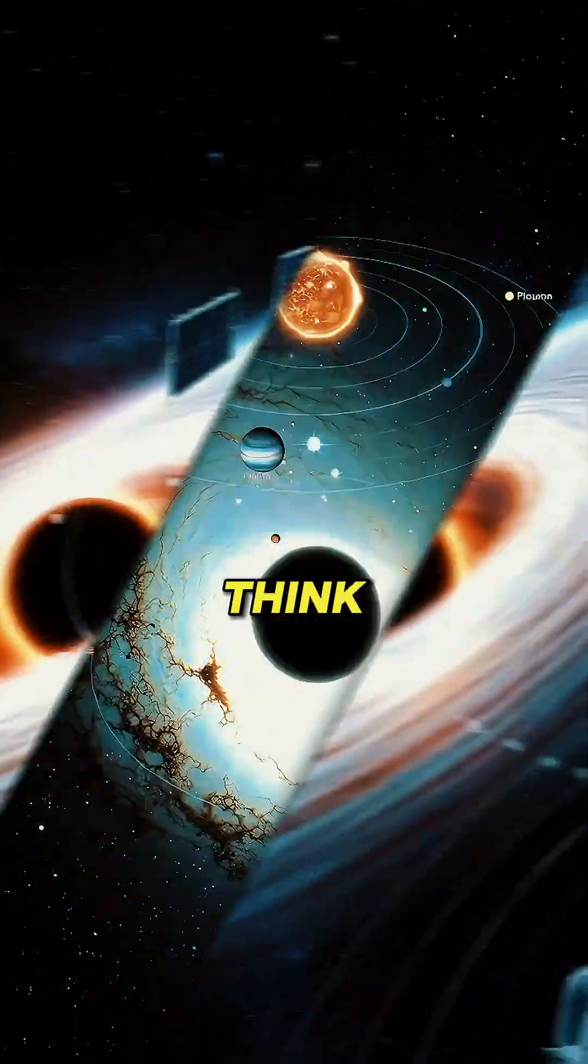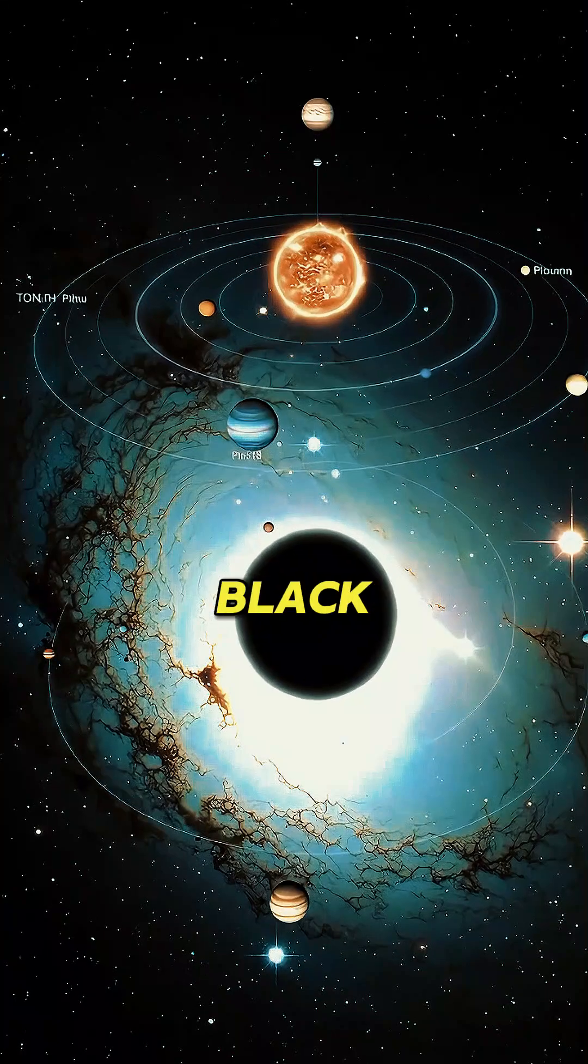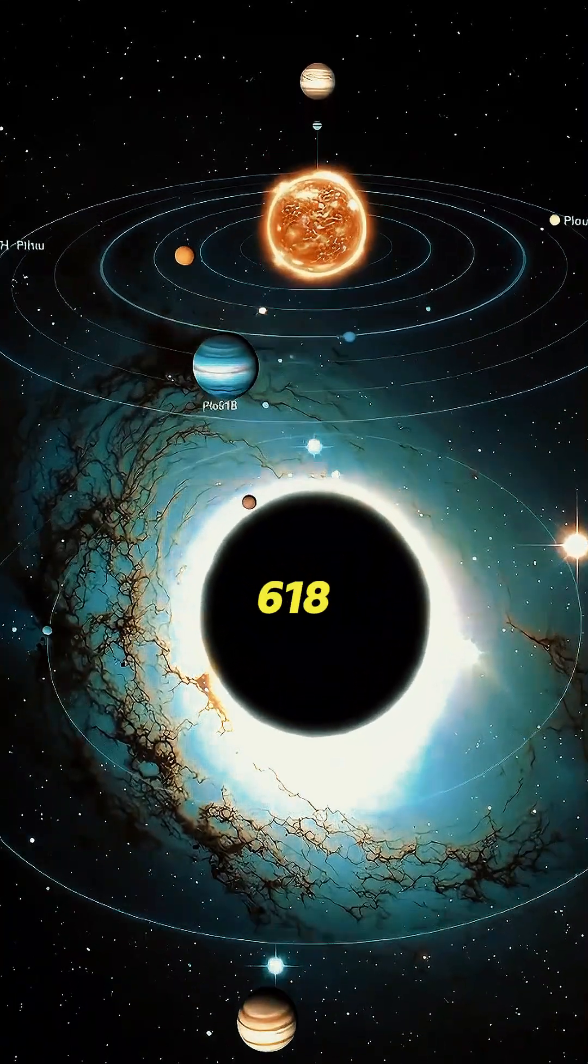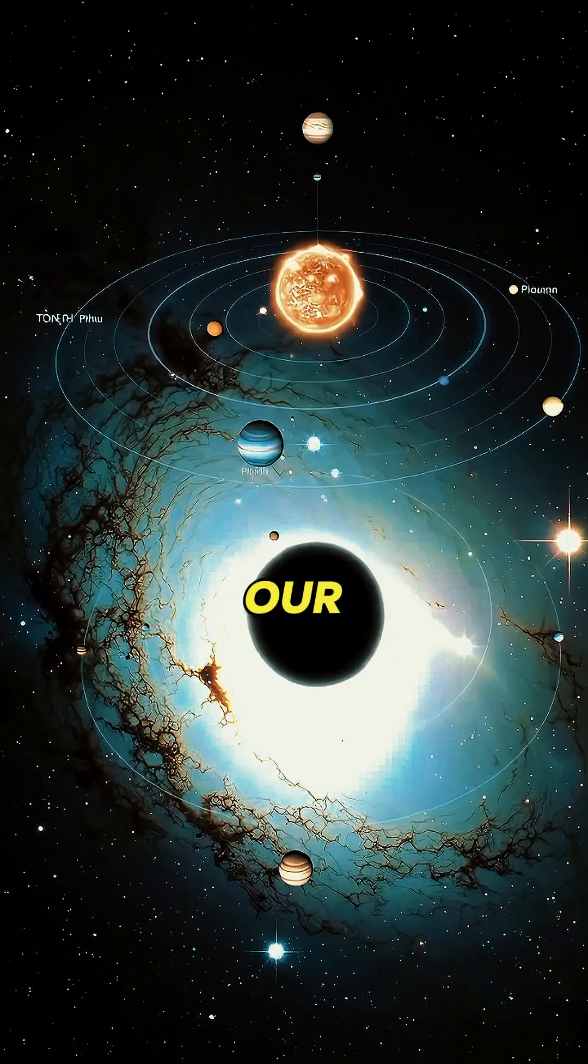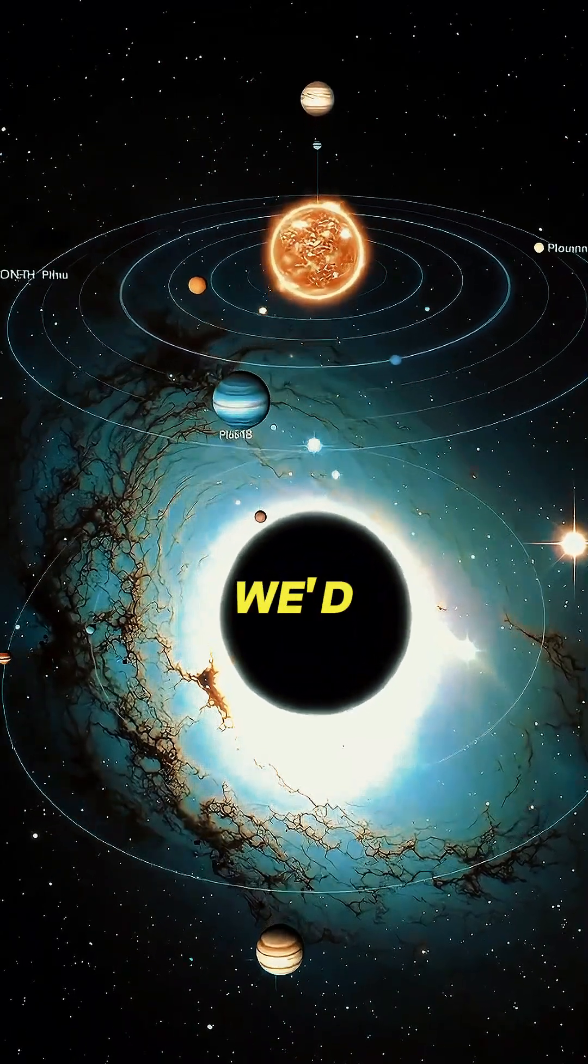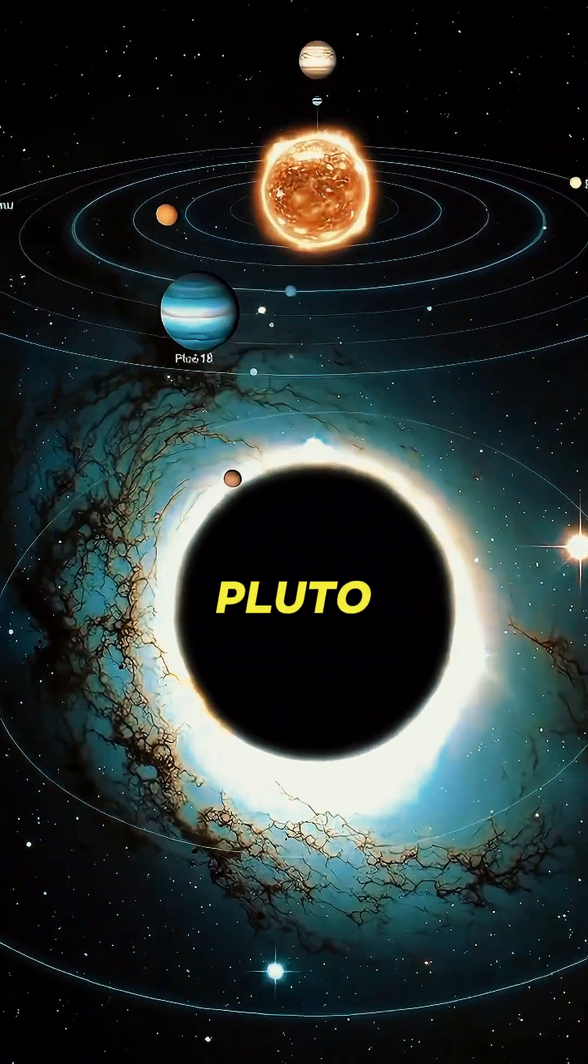It's mind-boggling to think about. The largest known black hole, TON 618, is over 66 billion times the mass of our sun. If our solar system were to orbit it, we'd be closer to its event horizon than Pluto is to our sun.